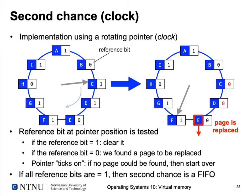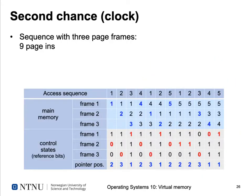If all reference bits are one in the circle, the second chance algorithm degenerates to FIFO: it must go through the entire list setting all bits to zero, then arrive back at the first page, which still has zero, and replace it — then the next, and so on.